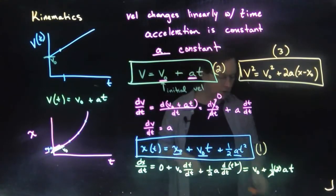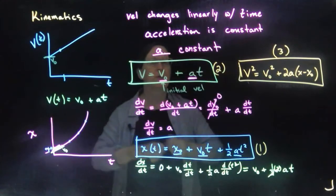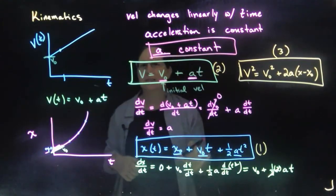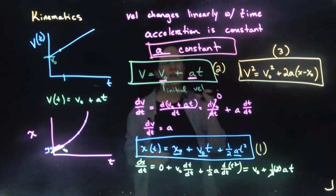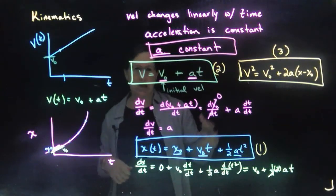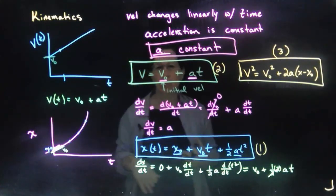The point is when we have a constant acceleration, that's the important thing, then we have all of these equations that allow us to then calculate our position, our velocity at any time, depending on what information we have.